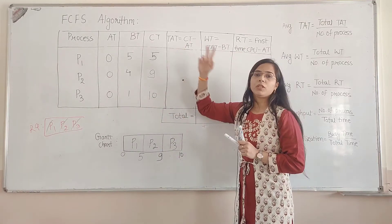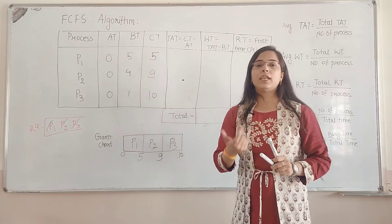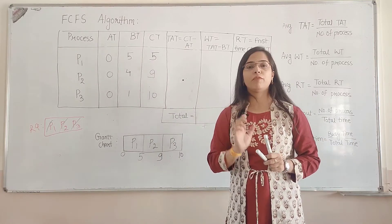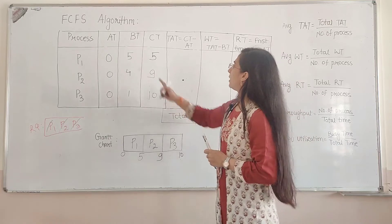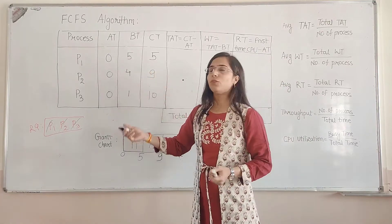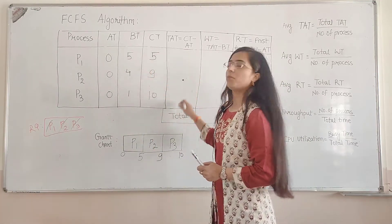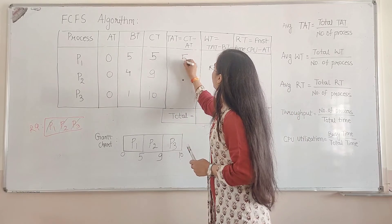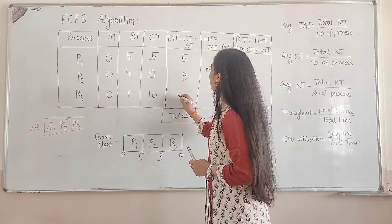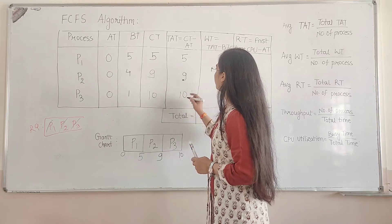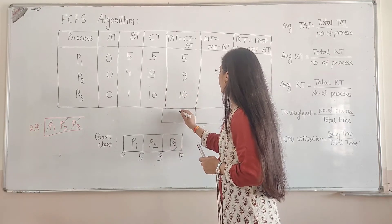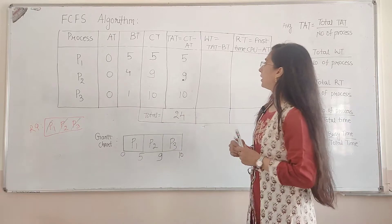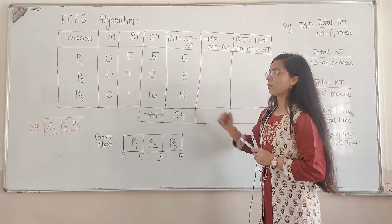Now, turnaround time is the difference between completion time and arrival time. Since arrival time is 0 for all processes, the turnaround times are: P1 = 5, P2 = 9, P3 = 10. The total turnaround time is 24.